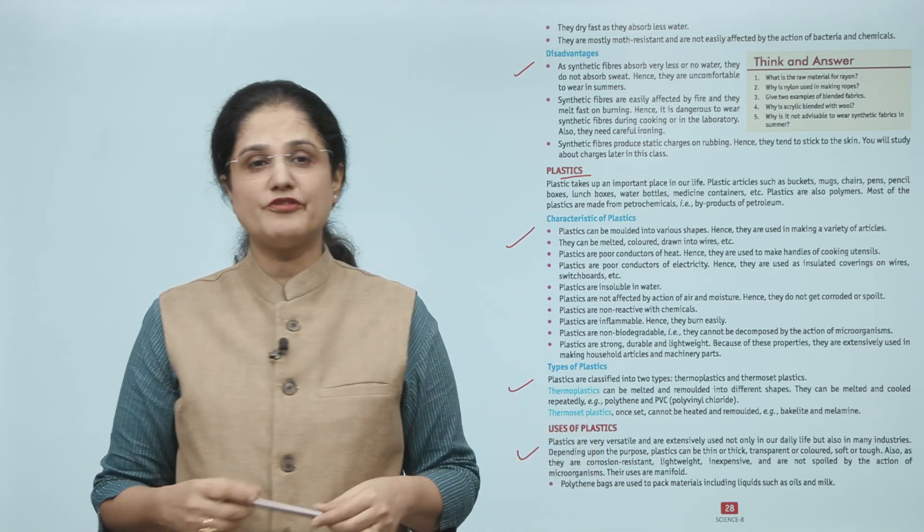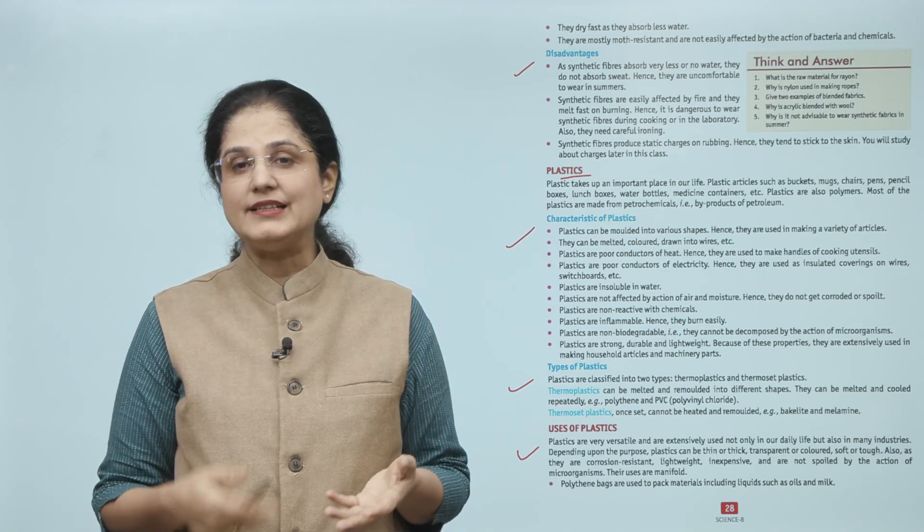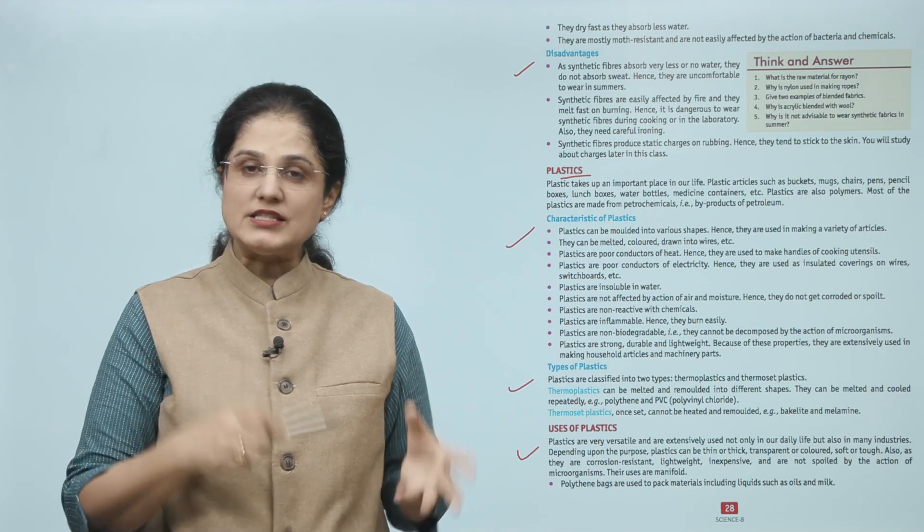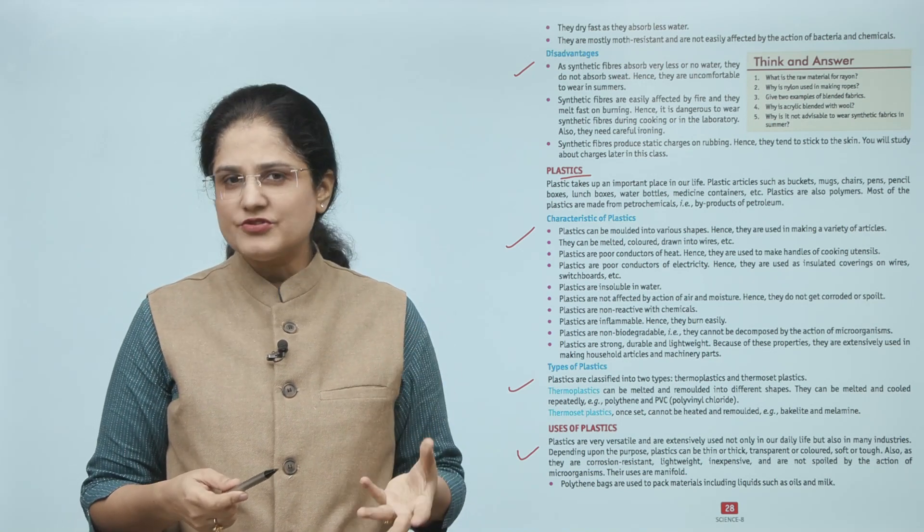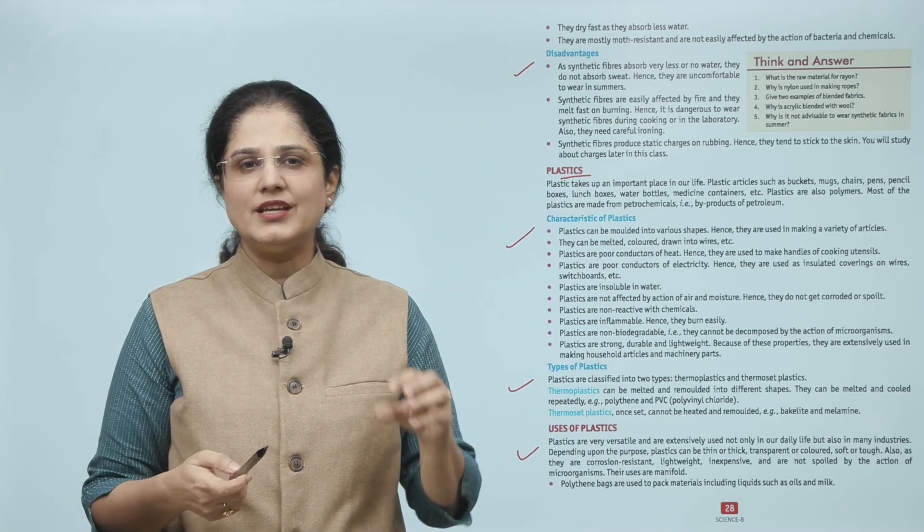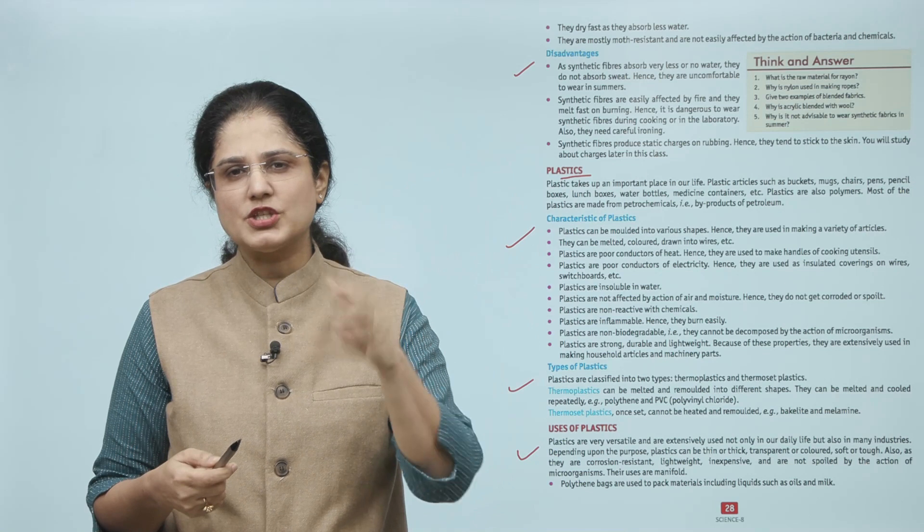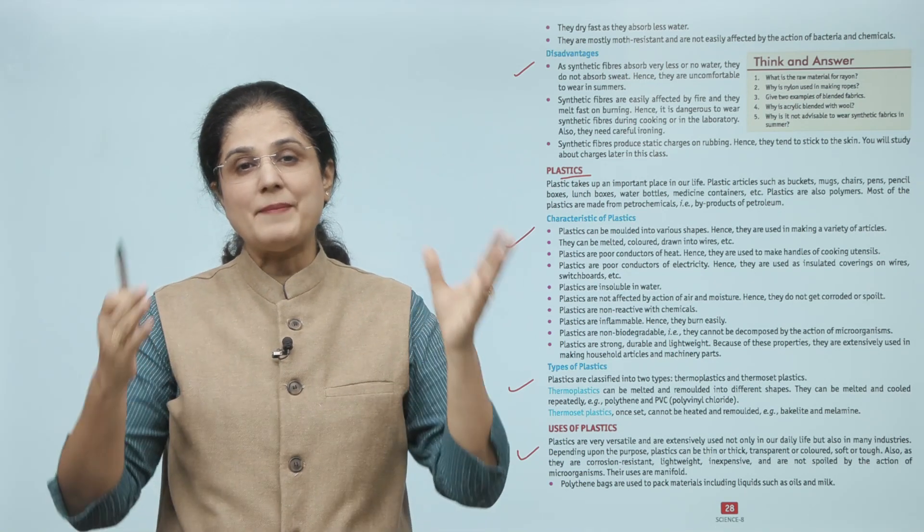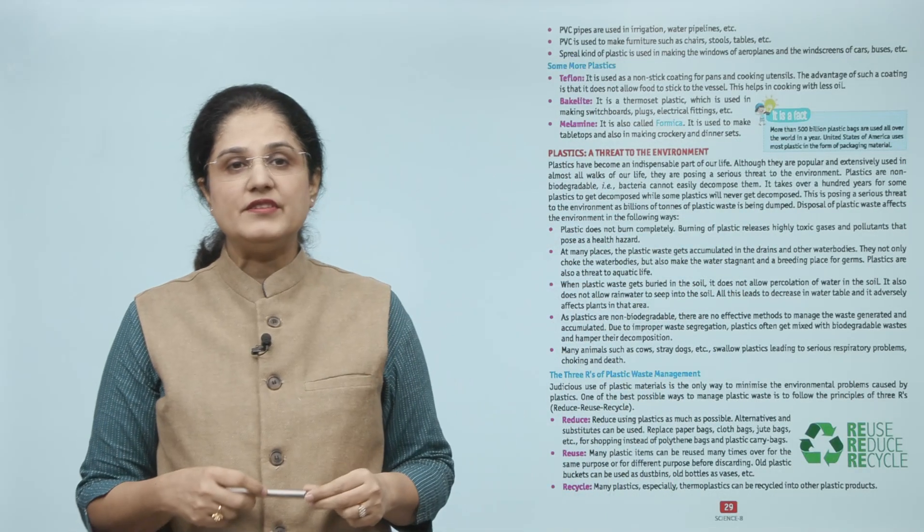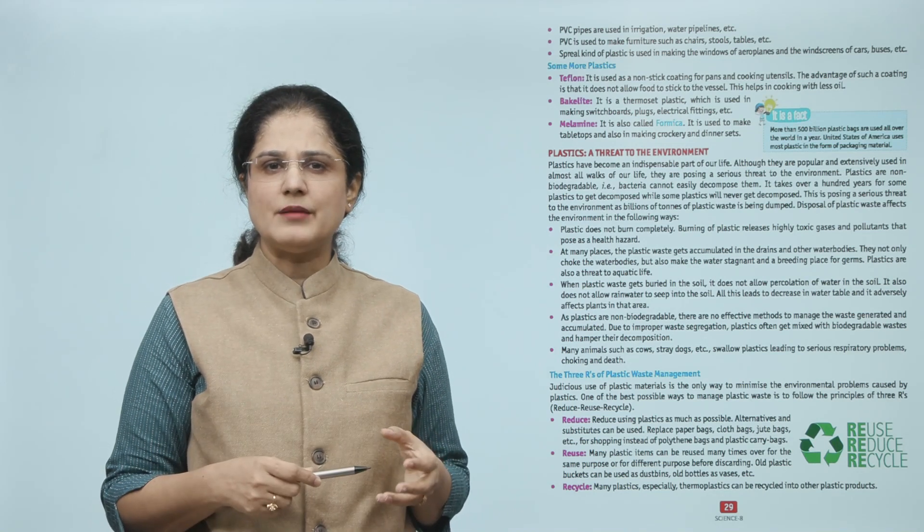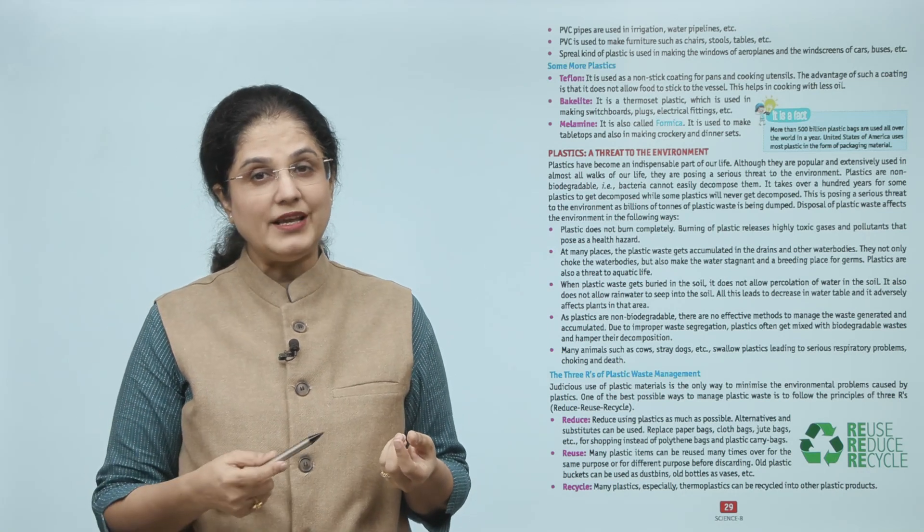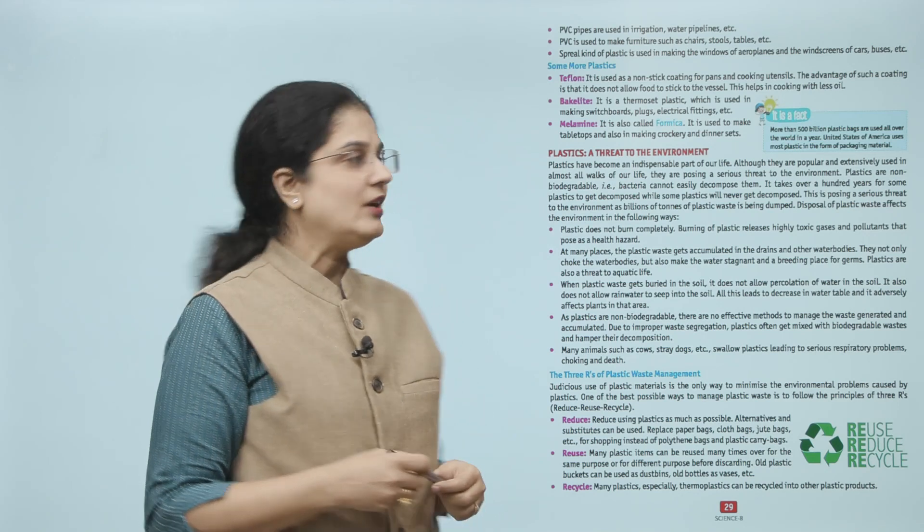Now let us look at the uses of plastics. They are very versatile, so they are used extensively in our daily life and in many industries. Depending upon the purpose, plastics can be thin or thick, transparent or colored, soft or tough. Also, as they are corrosion resistant, lightweight, inexpensive, and are not spoiled by the action of microorganisms, their uses are manifold. Polythene bags are used as packing material for liquids like oil or milk. PVC pipes are used in irrigation, water pipelines. PVC is used to make furniture like chairs, stools, tables. Special kinds of plastics are used in making windows of aeroplanes and windscreens of cars and buses.